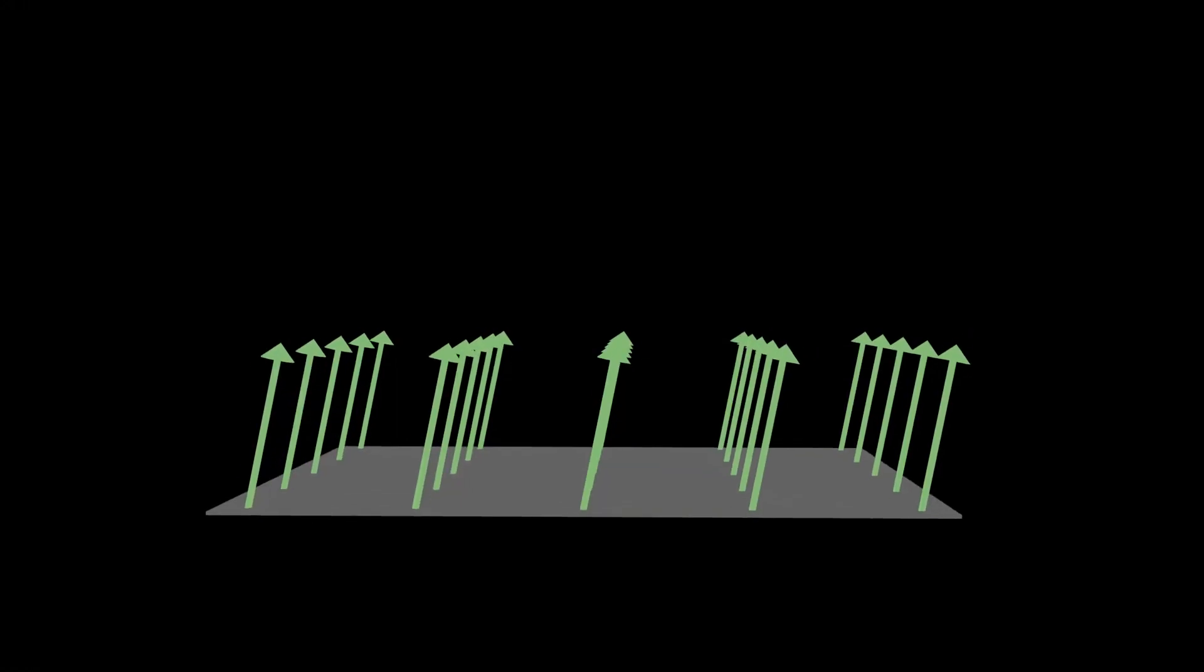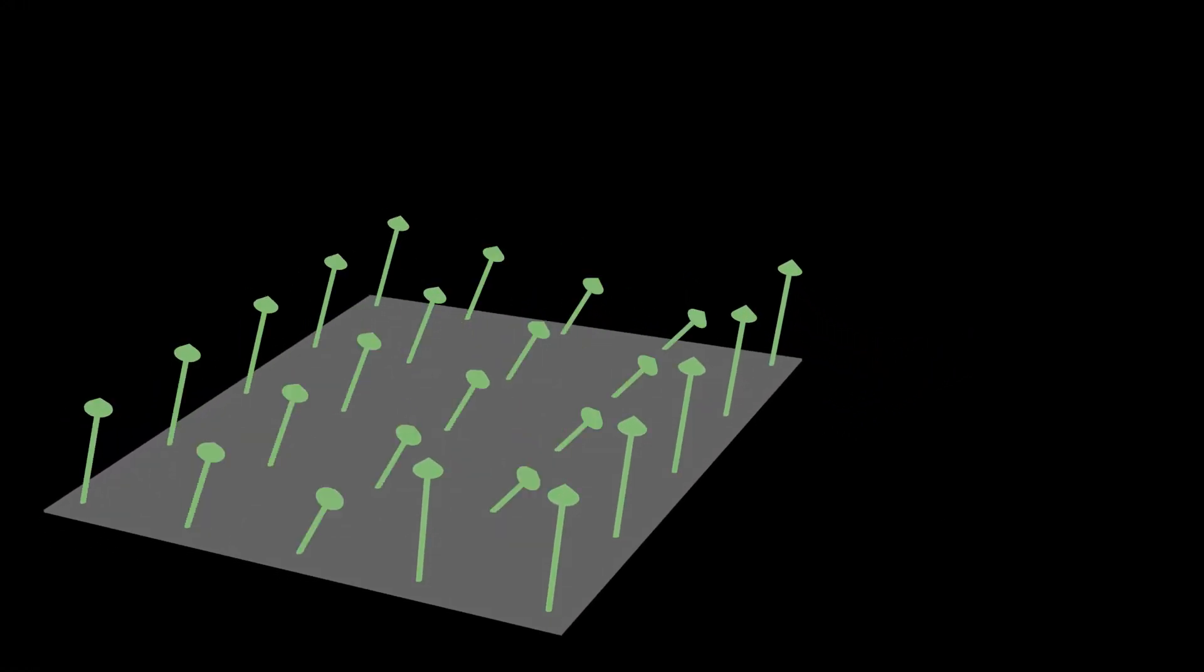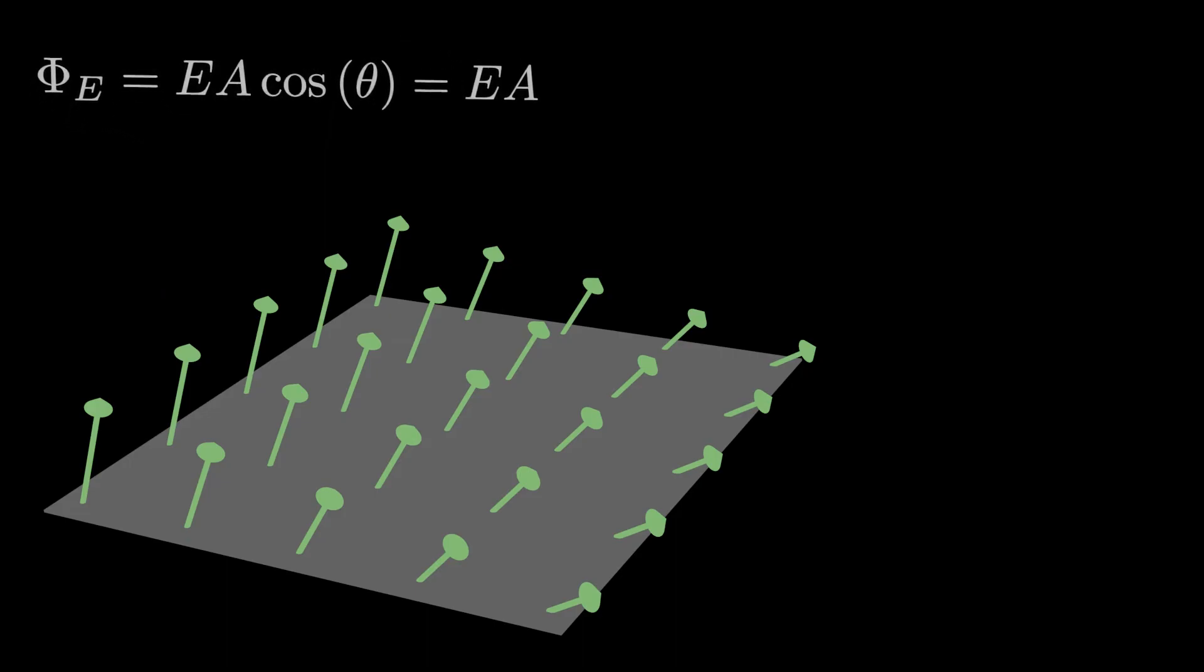You might remember from the Gauss's law module that we can have a varying electric field, in which case the simple rule E dot A for flux won't suffice. The problem is, what do we choose for E in our formula? We run into the same problem with a varying magnetic field. Depending on where we are on our sheet, we might have a stronger or weaker B field, so we have no idea what to plug in for B in our B dot A formula from before.